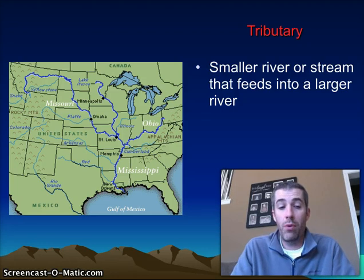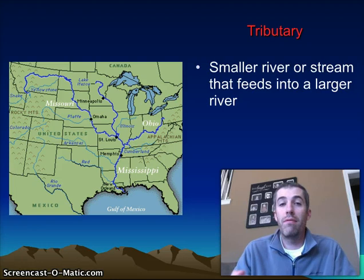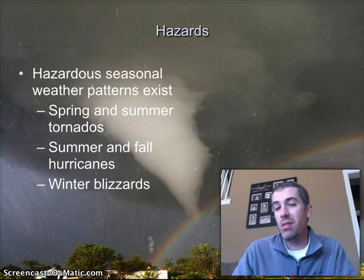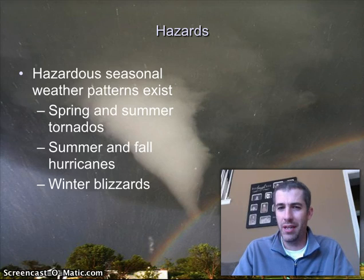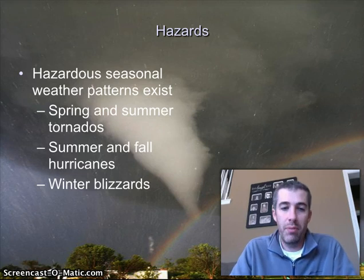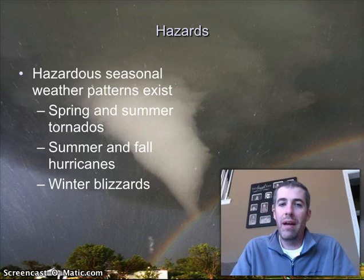One last thing before we wrap up: because of all these different climates and the different physical features that make up the North American continent, we have a lot of different weather patterns. These are some things we're very familiar with. There's nothing in red here to write down — this is more of an introduction slide. But we're used to seeing things like rain, rainbows, and a possible tornado in the background. Here in the Midwest and throughout the plains and down through the south, a lot of these weather patterns come up.